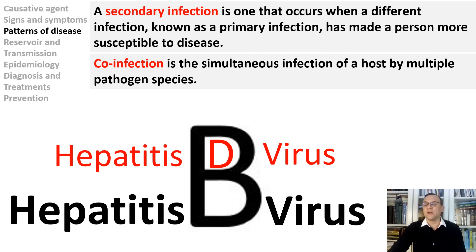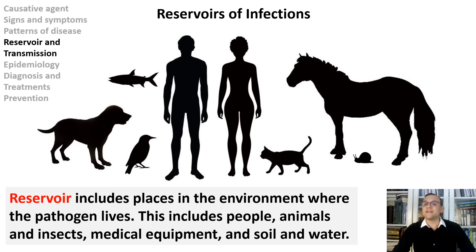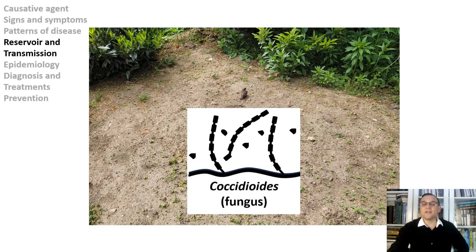Now I want to elaborate on how infectious diseases are transmitted to humans. First, let's answer where diseases come from — there is such a term as reservoir of infection. Reservoir includes places in the environment where a pathogen lives: people, animals, insects, medical equipment, and soil and water. Coccidioides fungi, which cause valley fever, reside in soil and can cause infection when microscopic spores are released into the air. Soil is also a reservoir for tetanus and gas gangrene, both caused by bacteria. Soil is a good example of a non-living reservoir of infectious diseases.